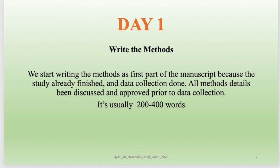Let's start with our seven-day workflow. For the first day, you need to start writing the methods. Why do we choose the methods on the first day? Because we already collected the data and already finished the methods, so everything is ready. It is the easiest part to start writing. Usually, the methods section is around 200 to 400 words.